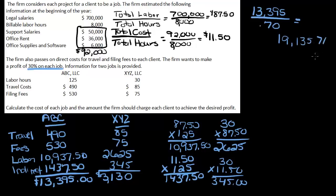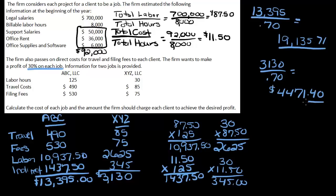For ABC, that gives us $19,135.71 — that's the price of the job. For XYZ, $3,130 divided by 0.70 gives $4,471.40. So we would charge ABC $19,135.71 — our cost is $13,395 — and the gross profit would be 30% of the $19,000. For XYZ, we would bill $4,471.40 and the cost of the job is $3,130.